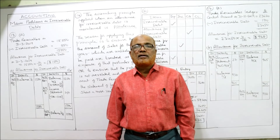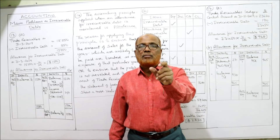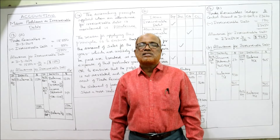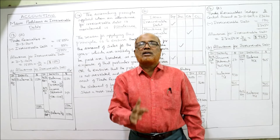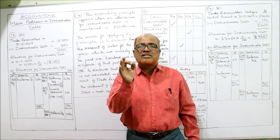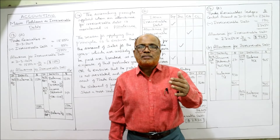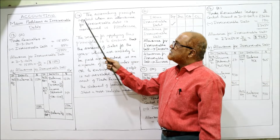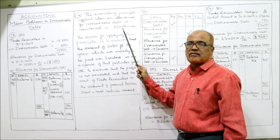The second question asks: why is this accounting concept applied? Because the prudence accounting concept says income should not be overstated. If any expected loss exists, that expected loss should also be charged to the income statement. The income statement should not be overstated — that is the principle of prudence. To follow that principle, we provide an allowance for irrecoverable debt.